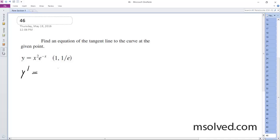I think maybe the chain rule. So x squared d dx of e raised to the negative x plus e raised to the negative x times d dx of x squared.